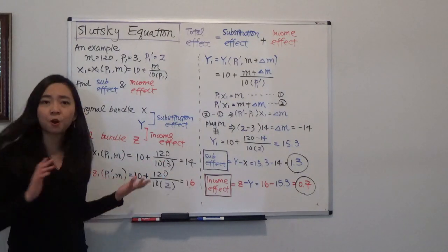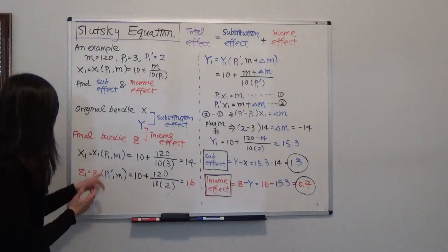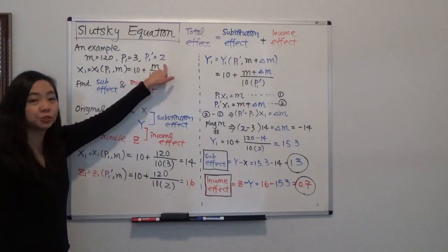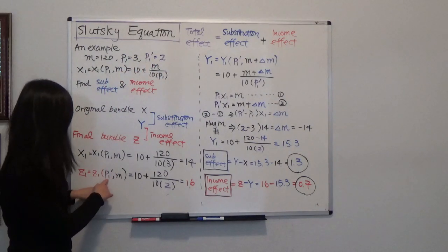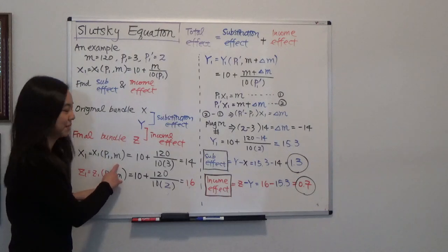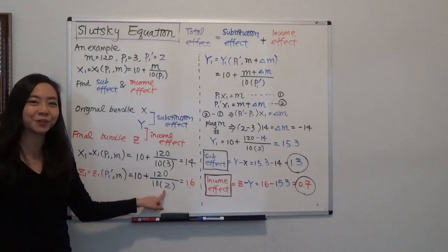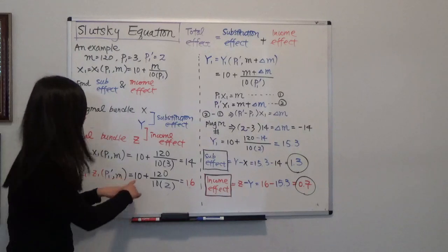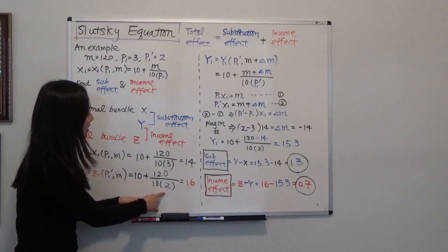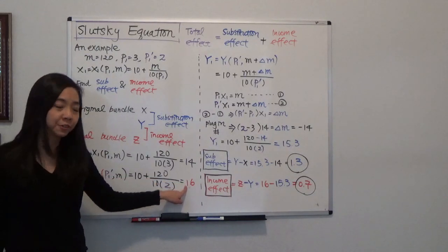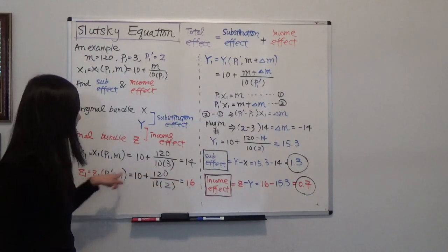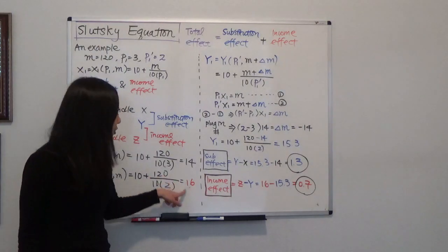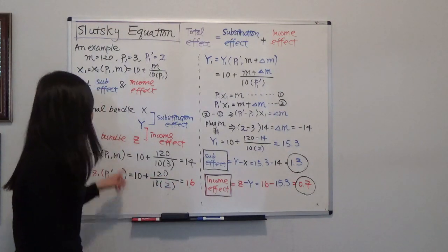What about our final bundle? The price has changed from $3 to $2, so we plug in P1' = $2. Everything else remains the same. After plugging in the number, we find that our final bundle Z is equal to 16 gallons.